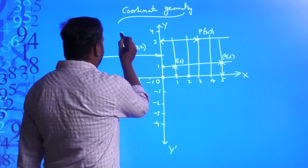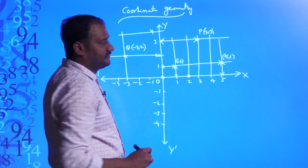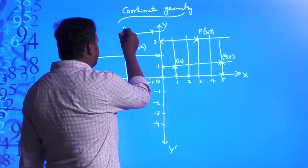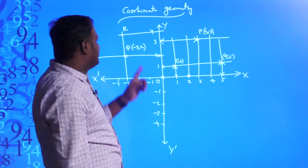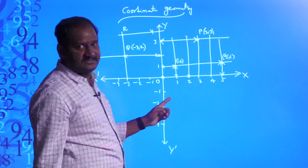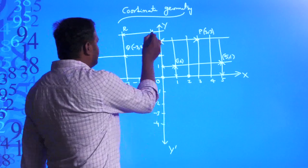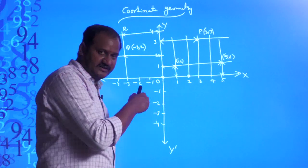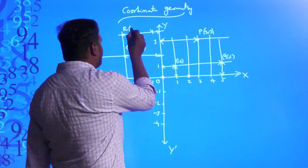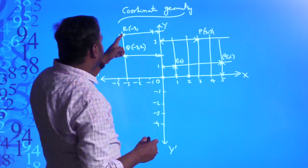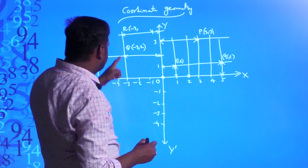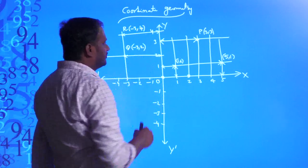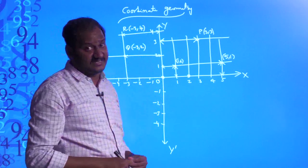Let me find one more point in the second quadrant. Drawing a horizontal line through 4 on the y-axis. Let this point be R. The distance of point R from the y-axis is 3 units in the negative direction, so negative 3. The distance from the x-axis is 4 units. So the point R is (−3, 4) in the second quadrant.